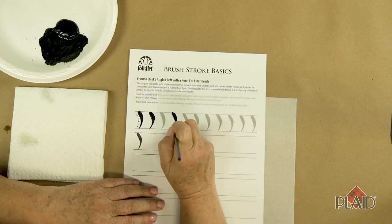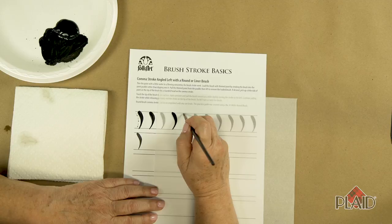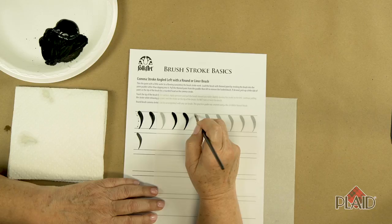There is one comma stroke to the left. I'm going to refill my brush with paint, touch, apply pressure, pull, lift, and drag back up to the point. Comma strokes to the left are really very simple to do.